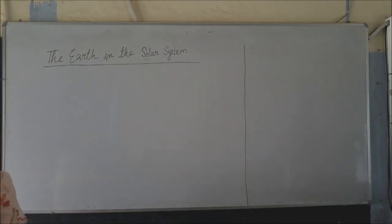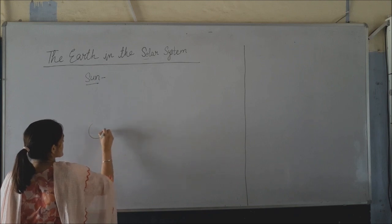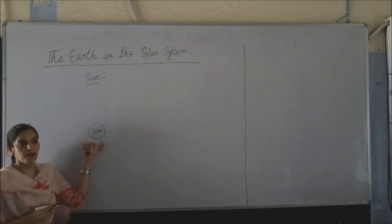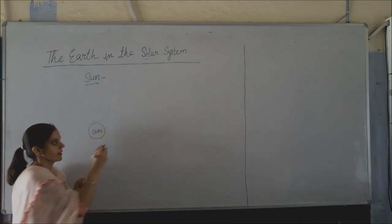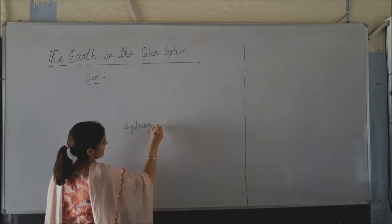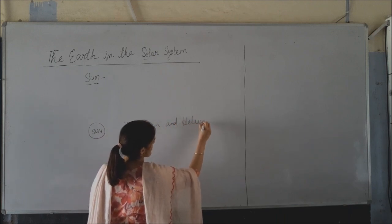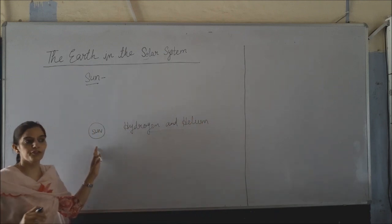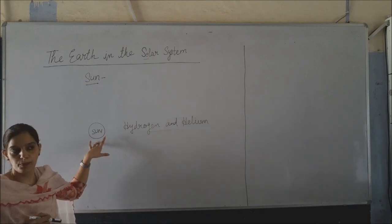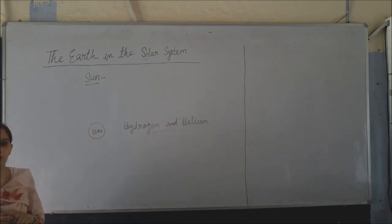Now let's start with our solar system — the sun. The sun is in the center of the solar system and it is made up of mainly two gases: hydrogen and helium. The sun also has gravitational pull, and with this gravitational pull it binds the solar system and holds all the planets together.